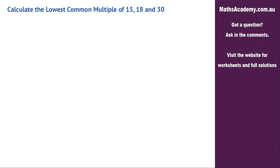In this lesson we're asked to find the lowest common multiple of 15, 18, and 30. Now there are multiple ways to do this. The way I like to do it is as follows.